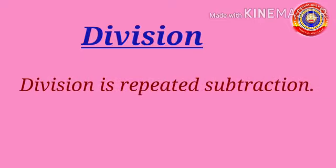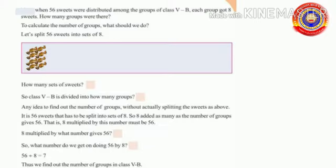You had already studied in your lower classes that division is repeated subtraction. Now we shall do a textual activity. When 56 sweets were distributed among groups, class 5B each group got eight sweets. How many groups were there? How will you calculate the number of groups?